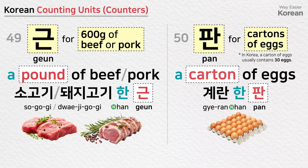근 is a counting unit of weight for 600 grams of beef or pork: a pound of beef — 소고기 한 근; a pound of pork — 돼지고기 한 근. 판 is a counting unit for cartons of eggs. In Korea, a carton of eggs usually contains 30 eggs: a carton of eggs — 계란 한 판.